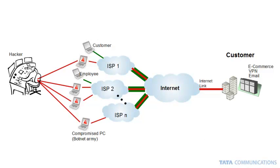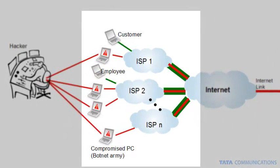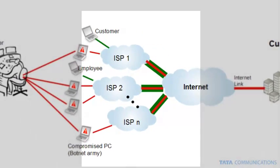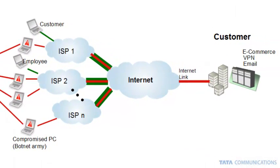The DDoS attack starts long before you ever see the first bit of traffic. It starts when hackers are able to compromise thousands, tens of thousands, hundreds of thousands, and in some cases millions of computers on the internet. These computers send malicious traffic over the same internet service providers that your customers and employees use. The traffic is aggregated across the core of the internet and then hits your links connecting your data center or your offices, blocking out access to your legitimate services.